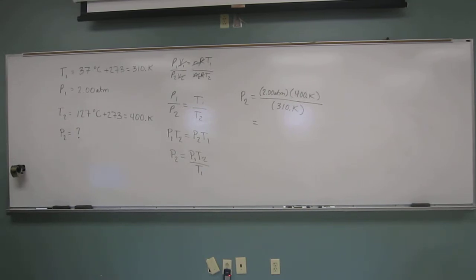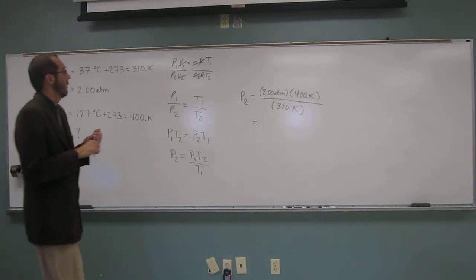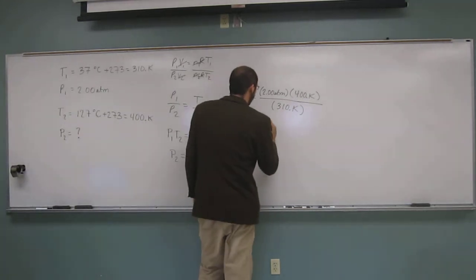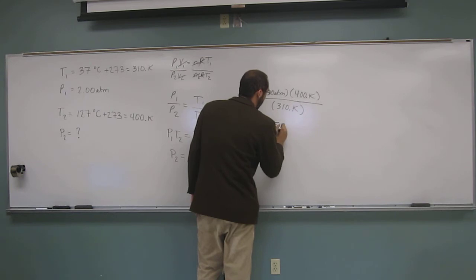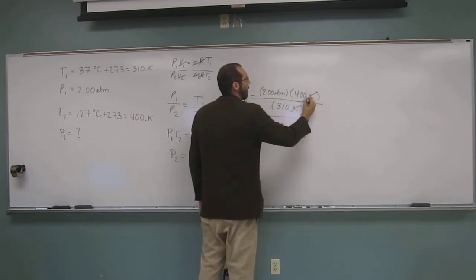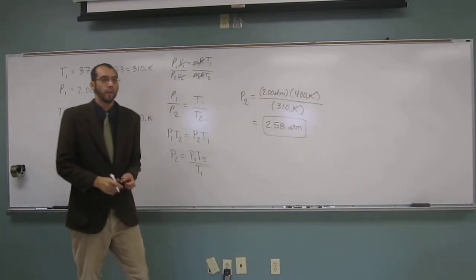So what do you get? 2 times 400 divided by 310, and the pressure I get is 2.58, and ATMs is the unit. Why? Because Kelvins cancel with Kelvins.